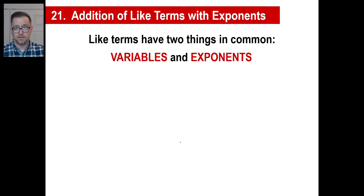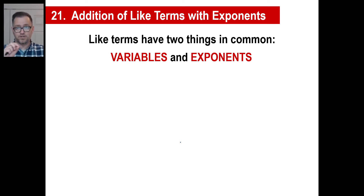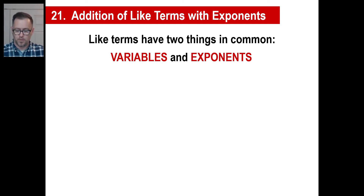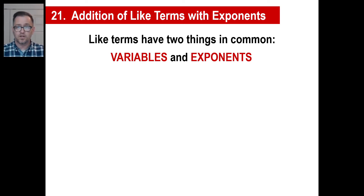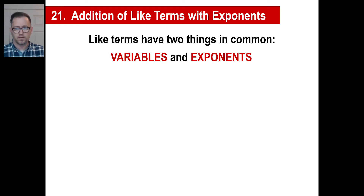Since we know how to do that, let's look at what makes like terms. Like terms have two things in common: the variables must be exactly the same, and the exponents attached to those variables must also be exactly the same. If they're not, they're not like terms. And remember — it doesn't matter what order things are in; abc is the same as bca.